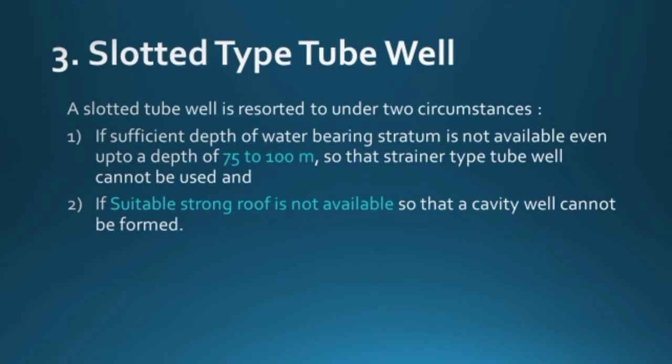The slotted type tube well is used only under two circumstances. First, if sufficient depth of water-bearing stratum is not available even up to 75 to 100 meters depth, so that a strainer type tube well cannot be used. Second, if a suitable strong roof is not available, so that a cavity well cannot be formed — which was the primary condition to choose a cavity type tube well. When both these conditions arise, we use the slotted type tube well.